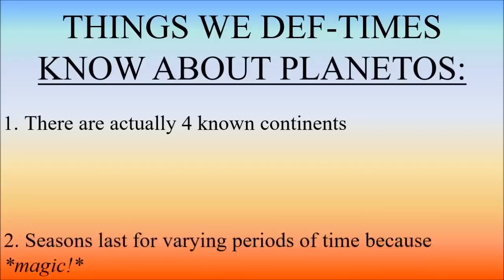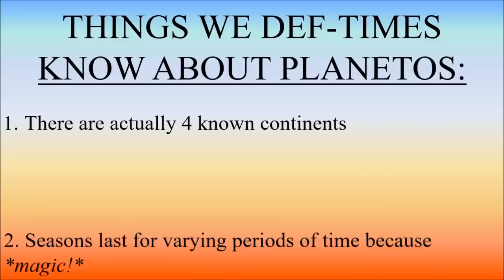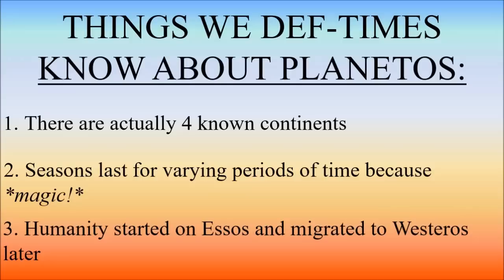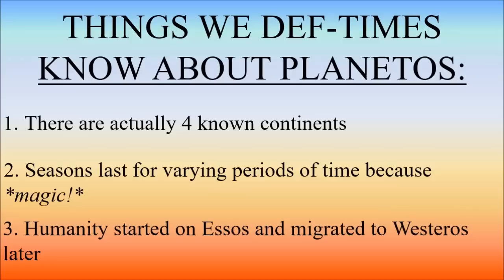So these are the three facts we definitely know about Planetos. One: there are four continents that we know of. Two: magic ensures that the seasons are all wonky, lasting for varying periods of time. And three: humanity — although not necessarily sentient non-human life — started on Essos before migrating to Westeros. From this point on, all the stuff we know about Planetos is given to us as stories, legends, and mythology.